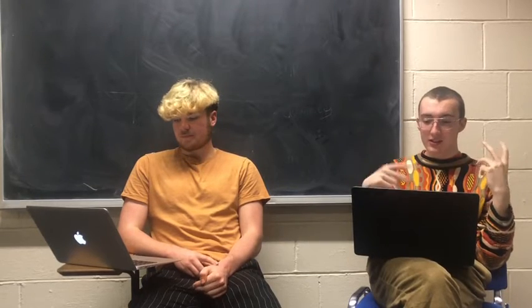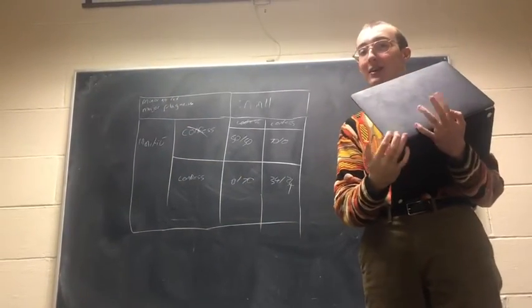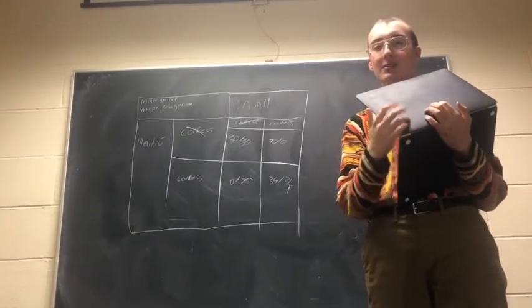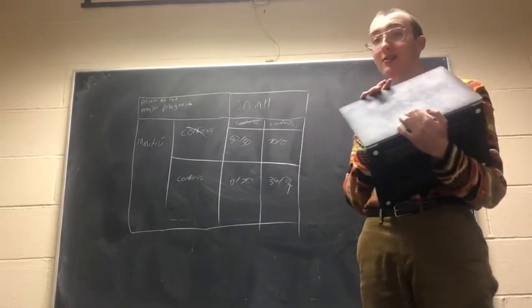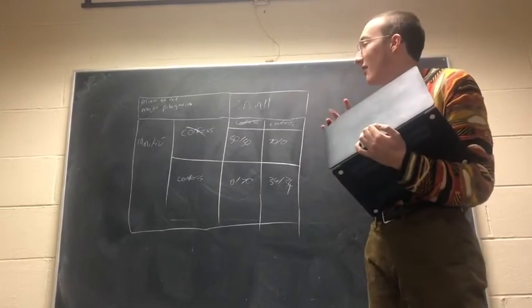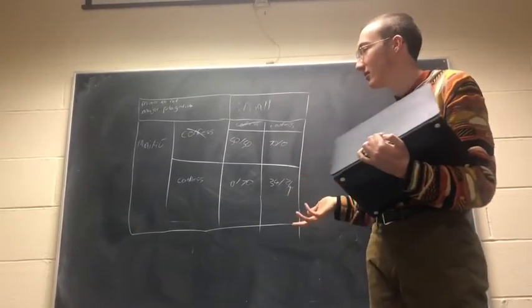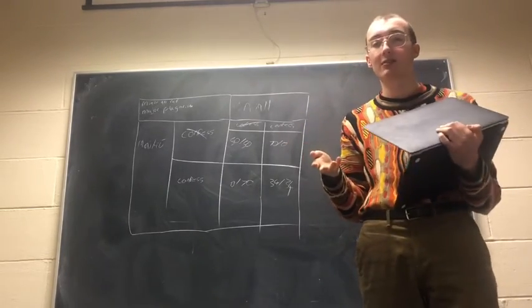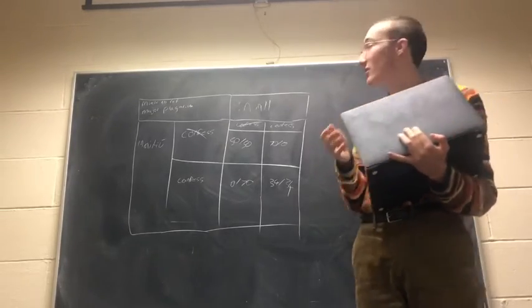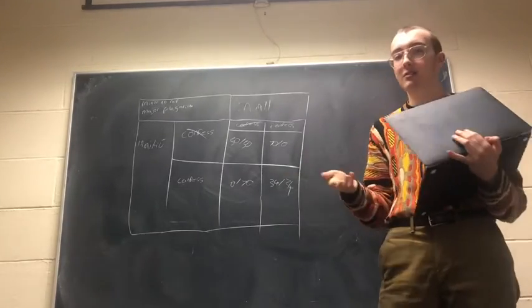The easiest way to envision this is through an adapted version of the Prisoner's Dilemma. This dilemma is based on the hypothetical scenario where we submit a project and get 70 out of 100. But there are one or two issues — first, there's no referencing done throughout, which is a minor offence. Then the TA suspects that we've plagiarized our work, which is a major offence. So she brings in Niall and Mathieu and asks them to either confess or not confess to plagiarizing the work.